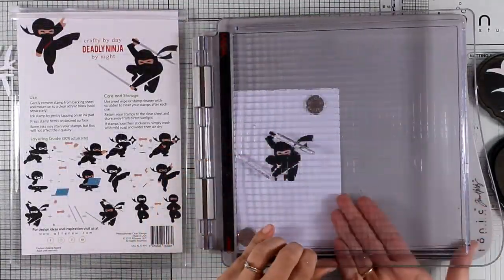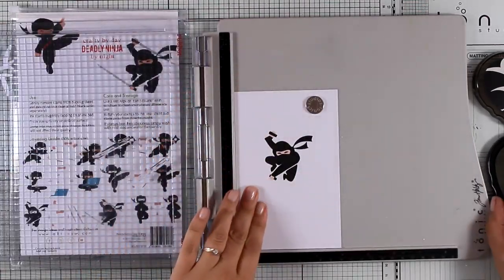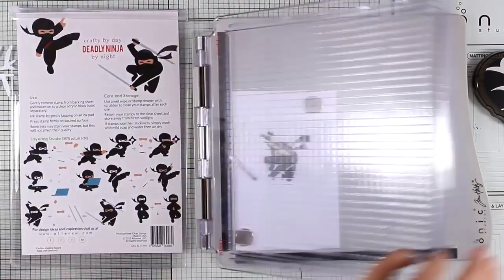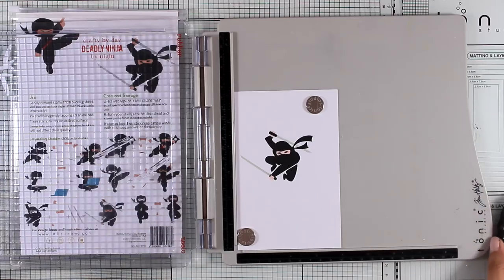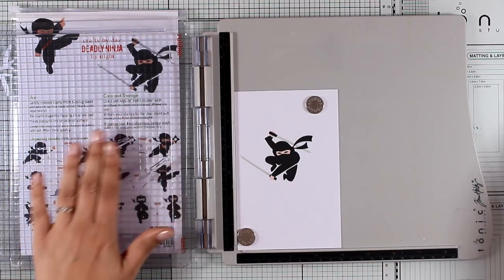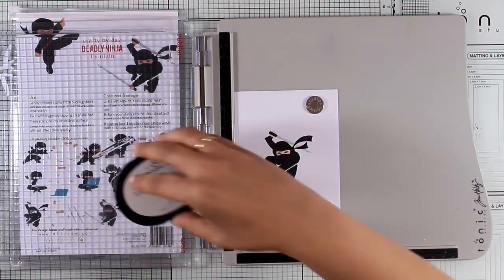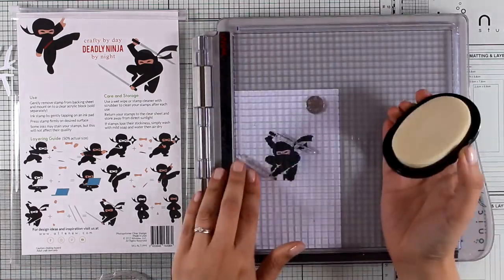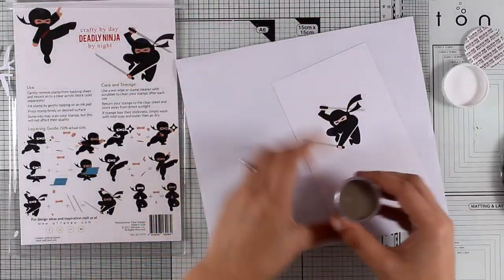To finish off my ninja, I need to stamp the swords, so I placed them where they need to go. I was following the guide on the back of the packaging. I started by stamping them with light gray, but this is where I decided that it would be awesome if I actually used embossing powder. So I'm going to stamp them one more time with embossing ink this time, and then I will apply Platinum embossing powder by Altenew.